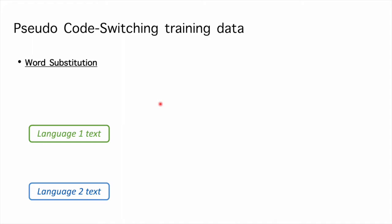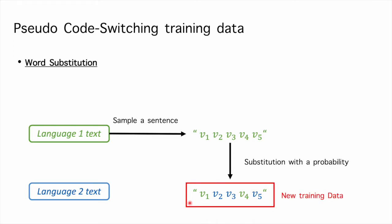To synthesize pseudo code-switching data, we can change the language of words in monolingual text. For example, we can sample a sentence from the first text set. Then we can substitute some words to the other language with a predefined probability. The new sentence is added to the original corpus as training data.